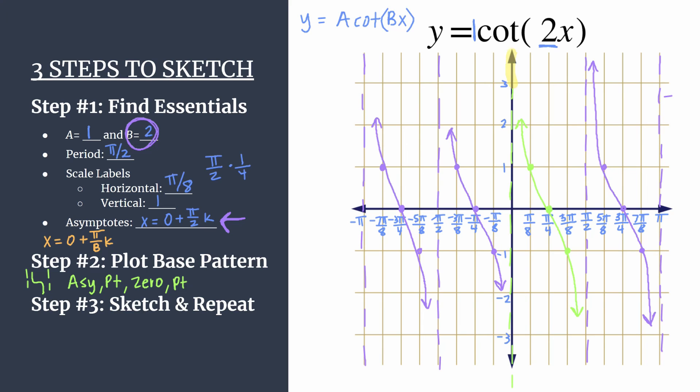So if we look between zero and pi right here, you see we have one, including the asymptote of course, two cycles happening. So that's another great way to double check the accuracy of your final graph.